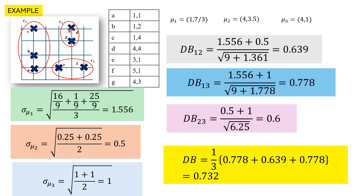We have seven points and their coordinates. First, we compute the means. The mean for cluster 1, which comprises points A, B, C, is mu_1 = (1, 7/3). Similarly, we compute mu_2 and mu_3. Then we compute the dispersions. The dispersion for the first cluster is given by the squared distances from the mean summed over all points: for the first point we get (4/3) squared, then (1/3) squared, and for point C we get (5/3) squared — giving sigma_mu_1.